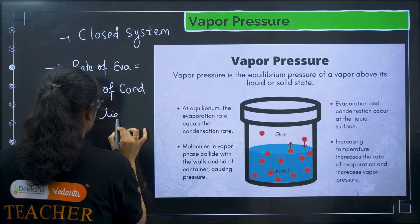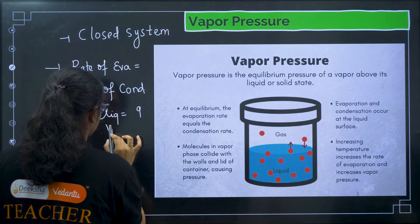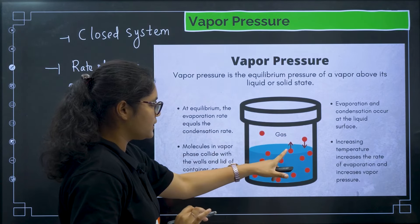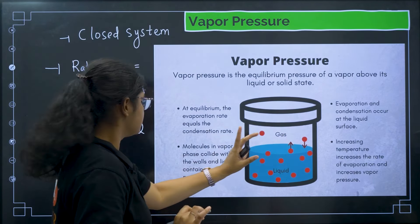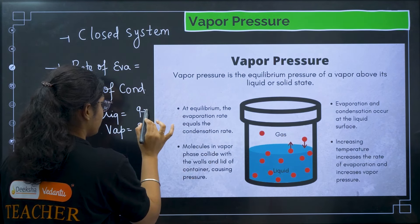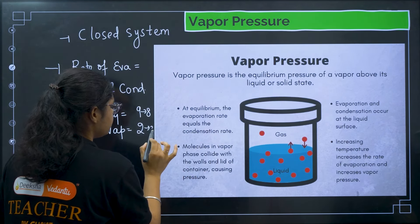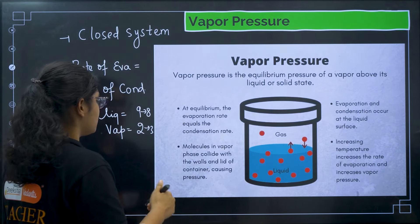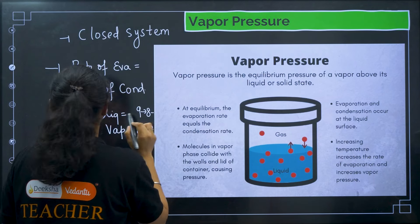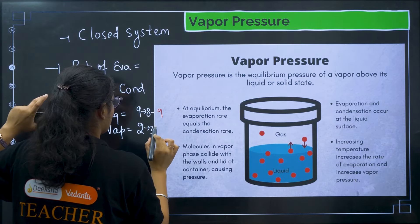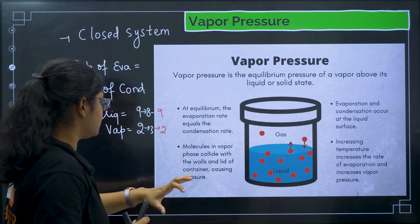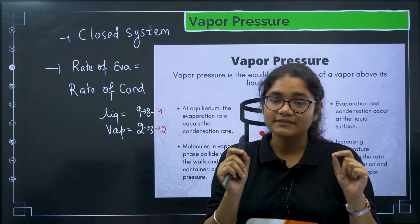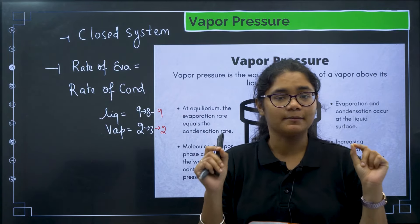At any point in time, the number of particles in the liquid phase and in the vapor phase remain constant — this is the point where equilibrium has been reached, meaning the rate of evaporation equals the rate of condensation. The molecules in the vapor phase collide with the walls and lid of the container causing pressure, and when they collide they lose their energy and come back to the liquid phase. Evaporation and condensation both occur at the liquid surface.